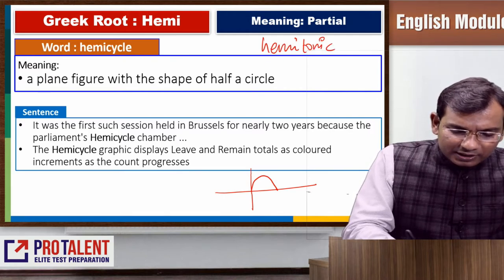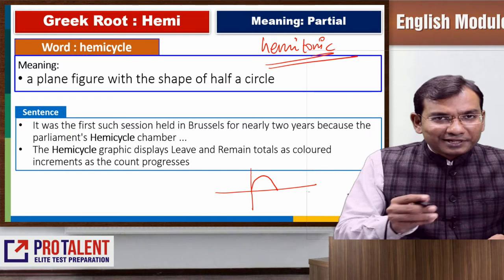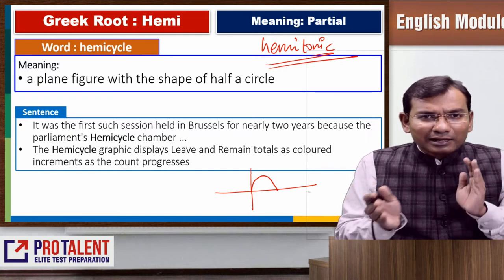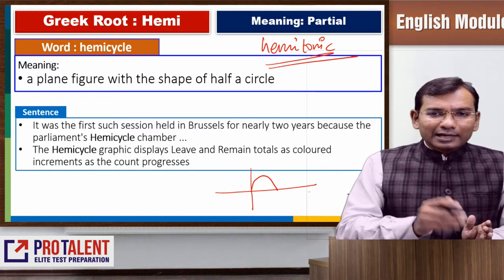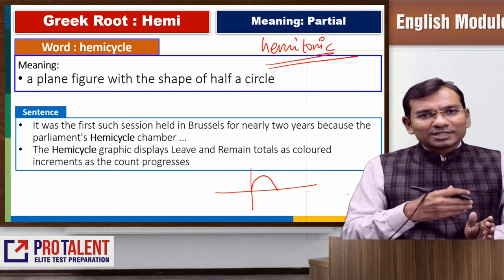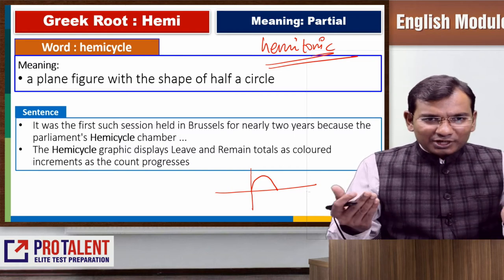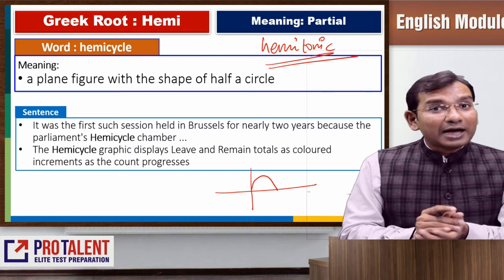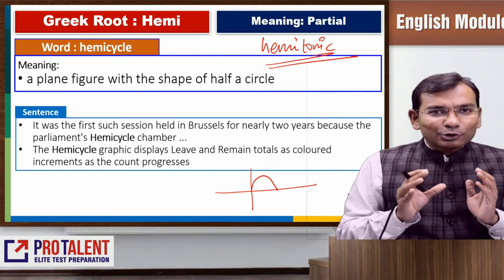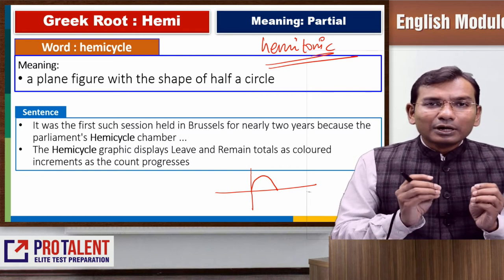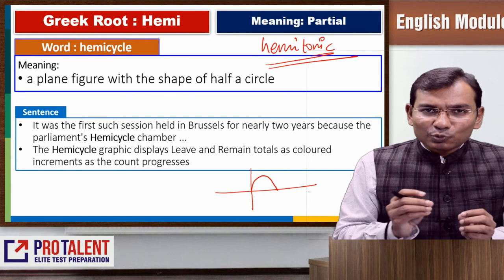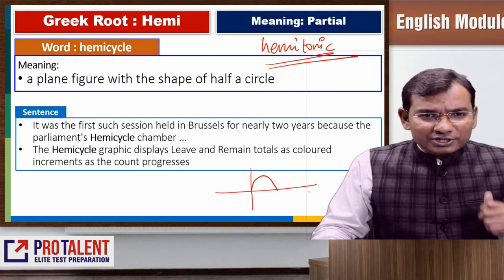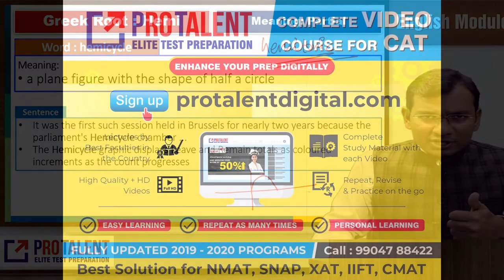Hemitonic, similar to semitonic, means it is not a full completion of a cycle — only half a cycle is complete. With this I'm closing this session. I hope you have learned these roots related to English words. Thank you very much for watching and all the best.